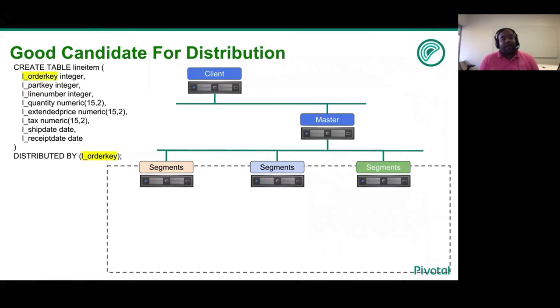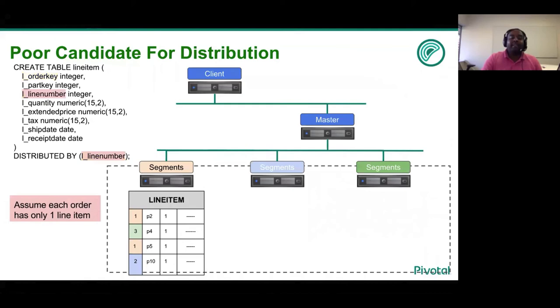In contrast, let us look at a good distribution policy. For instance, let us look at order key as the distribution policy for line item. This is similar to the order key of the orders table. The same four tuples that we saw in the poor distribution example, let us now place these line items onto the segments based on order key as the distribution policy.